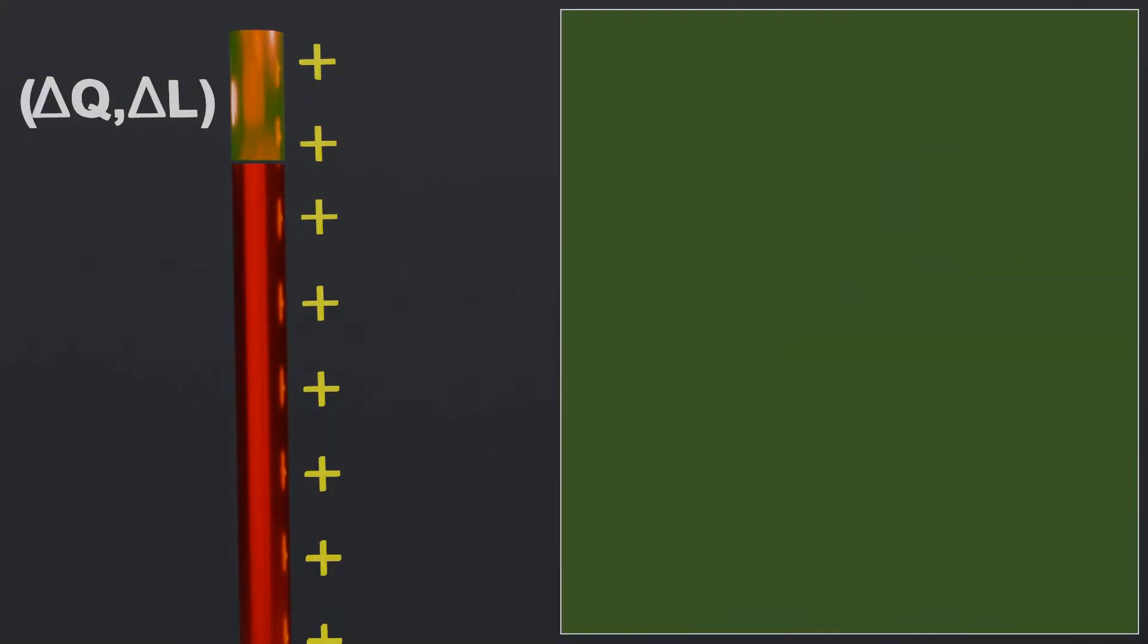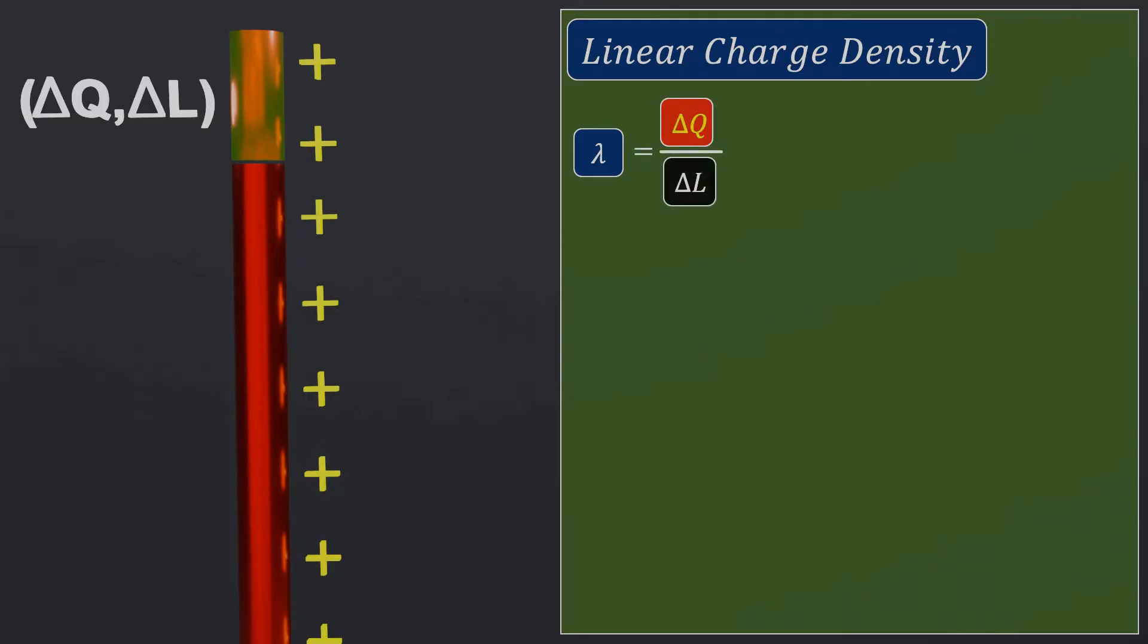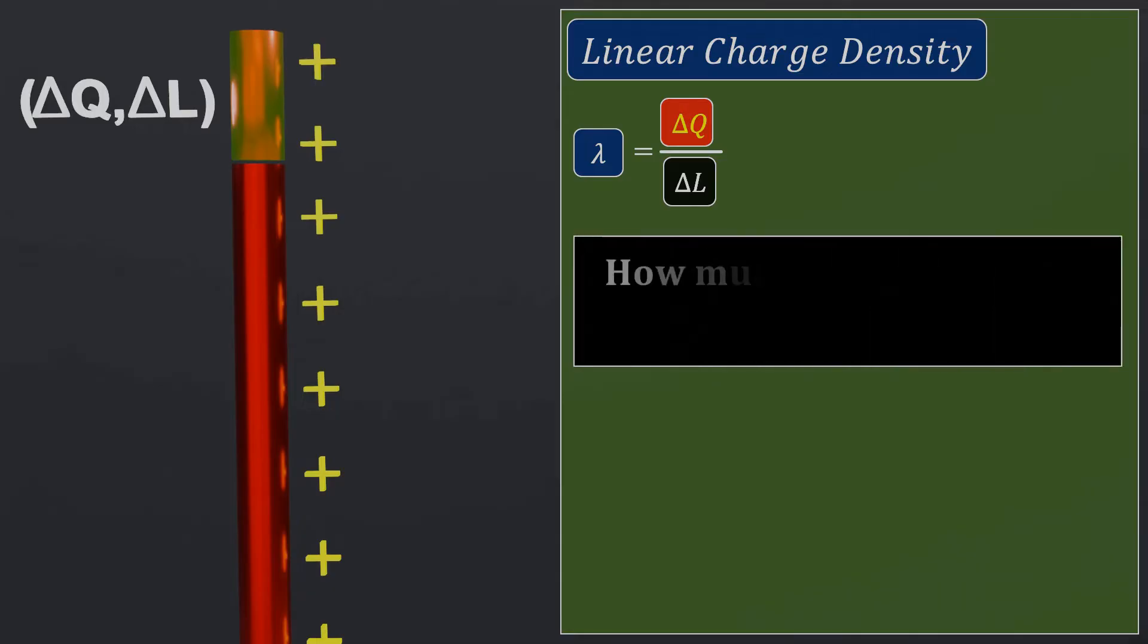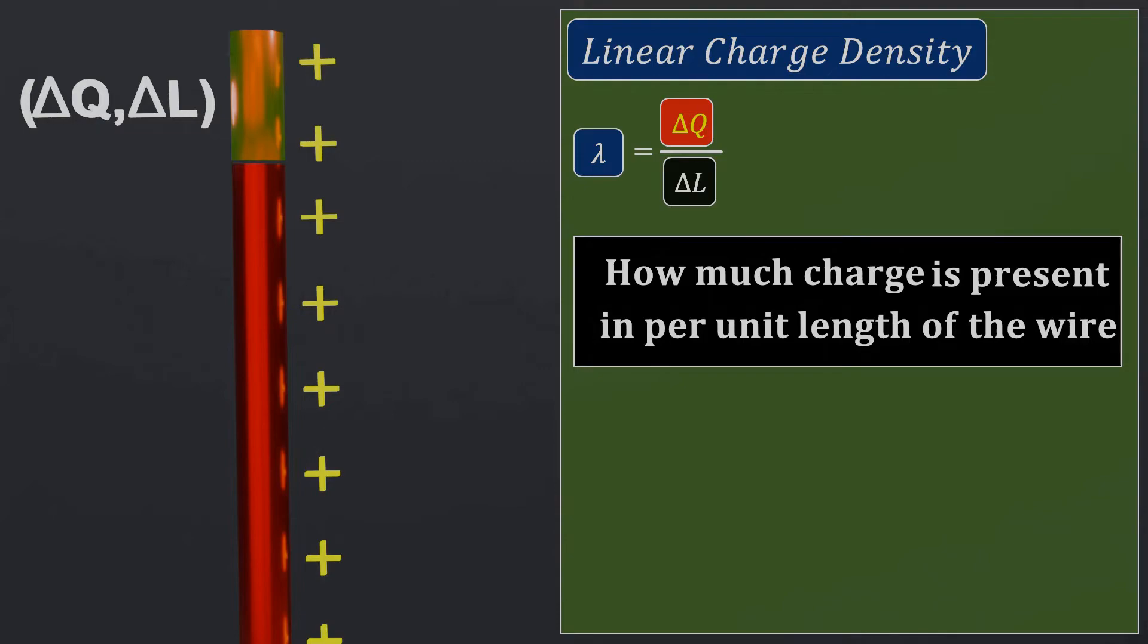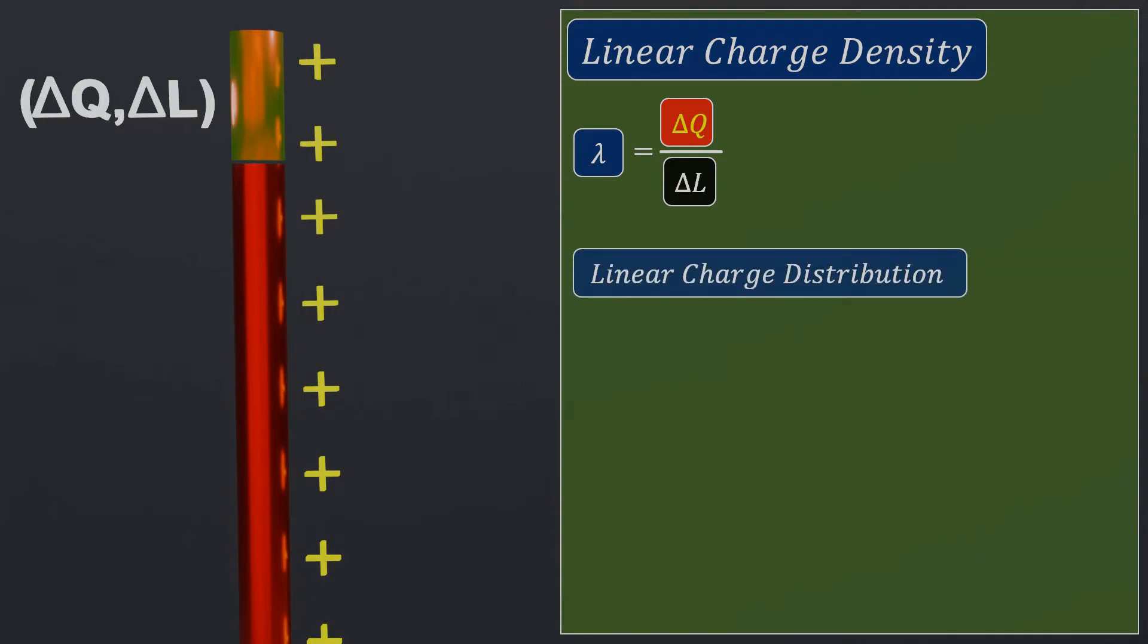If it is so, we can consider a small element del L on a wire. This element may be quite small at the macroscopic level, but it would have a large number of charges on it, which is sufficient to define the charge del Q on the element. To simplify the calculation, a new term, linear charge density lambda is introduced, which is equal to the charge del Q by del L. Linear charge density physically defines how much charge is present per unit length of the wire. And this type of charge distribution is also known as linear charge distribution or line charge.